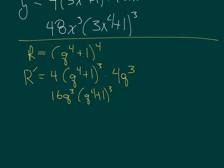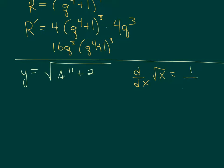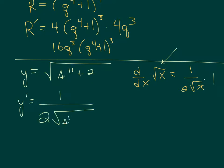If I have a radical — so if I have something like y equals the square root of s to the 11th power plus 2 — remember, the derivative of the square root of x is 1 over 2 times the square root of x, but it's also times the derivative of x. The derivative of x is just 1. So here, this is going to be 1 over 2 times the square root of the inside, times the derivative of the inside, and I'm done.